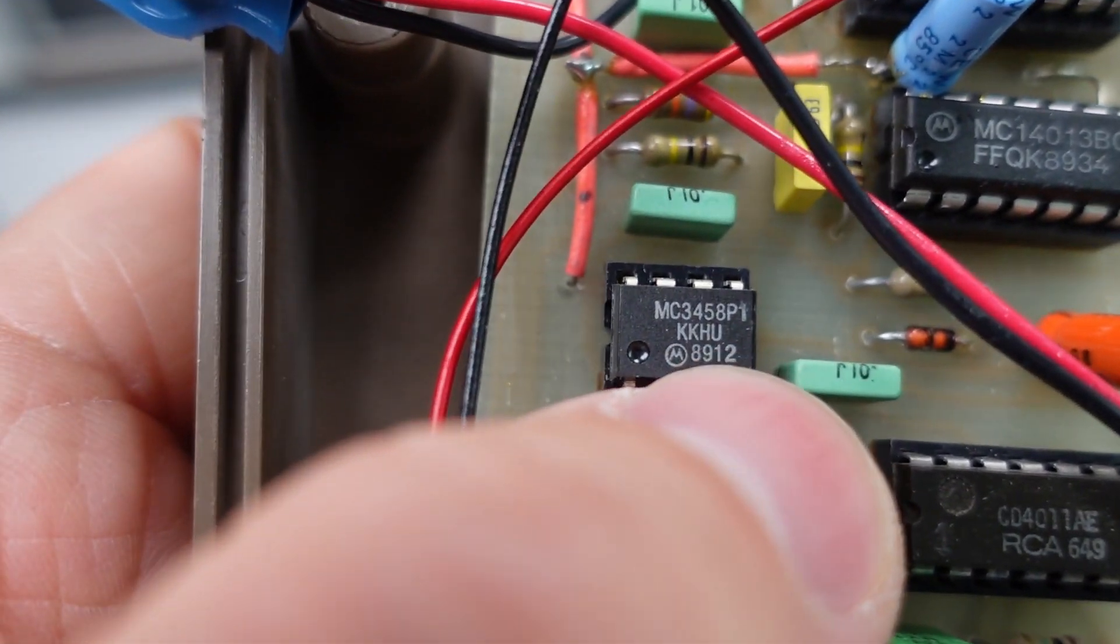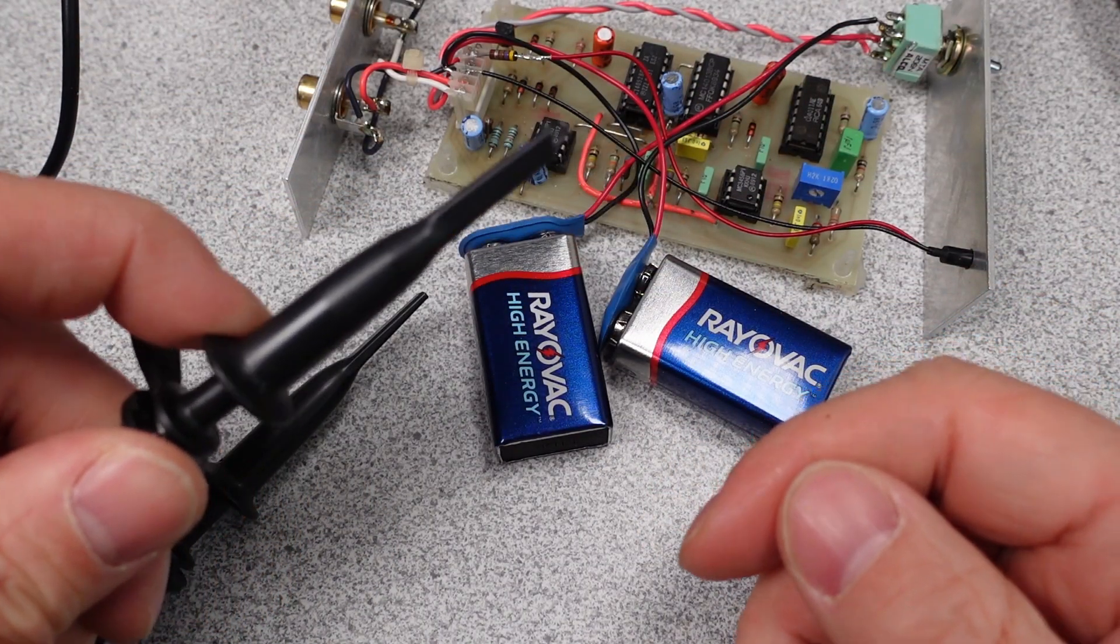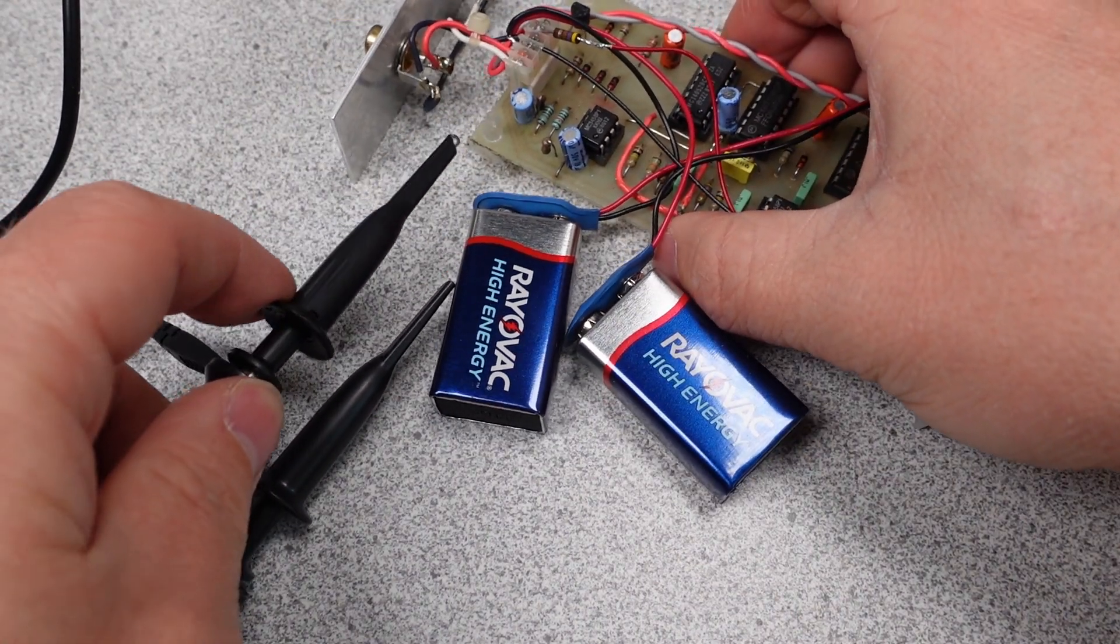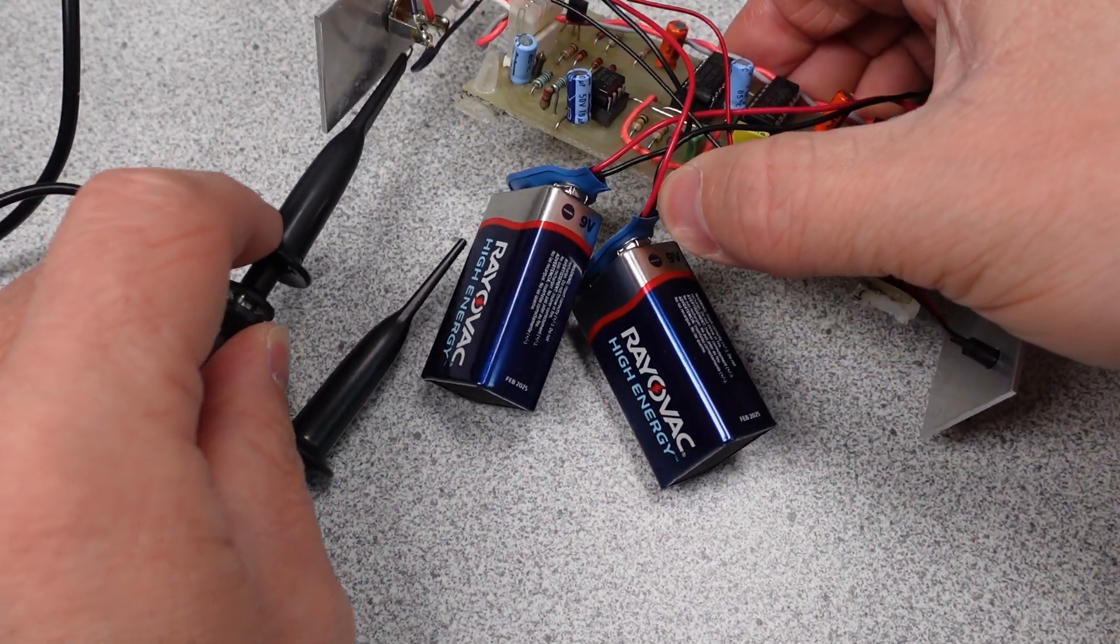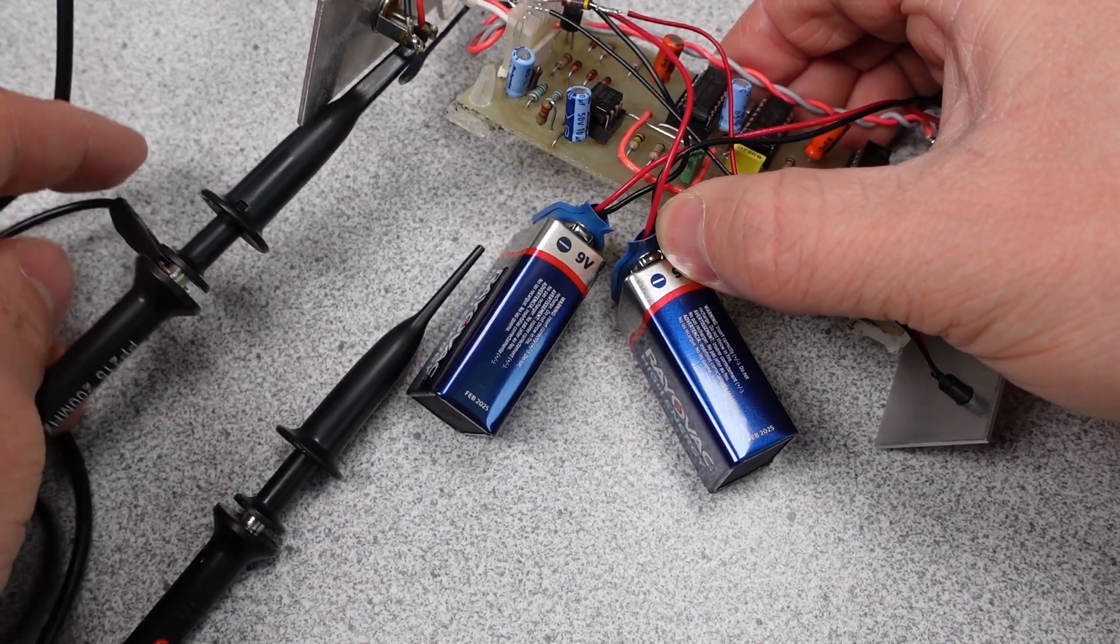The last chip on this board is an MC14052. This is a dual analog four-channel multiplexer chip, or basically a dual digital switch with four inputs and two outputs, as used in this case. This can switch between four different signals and send those to two different outputs. We will analyze how this is being used after we take a look at the signals from this device.